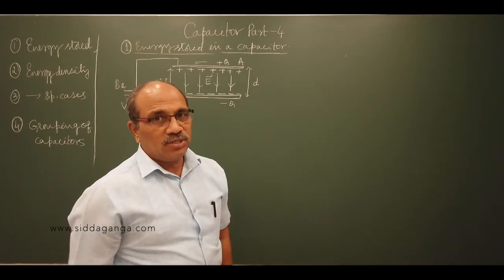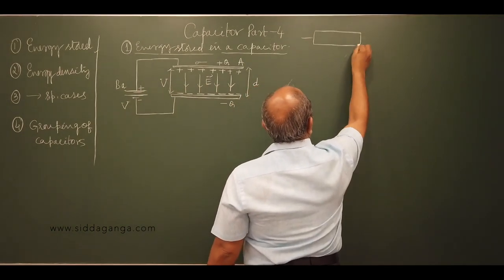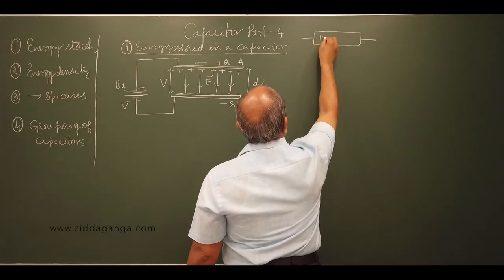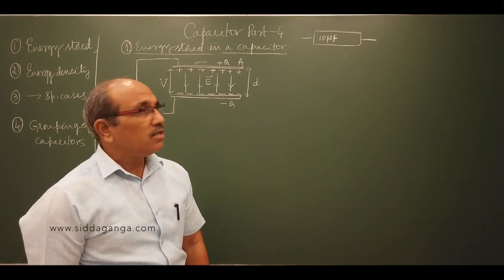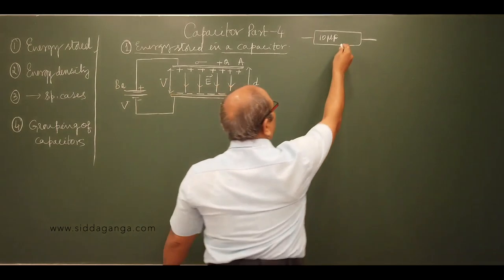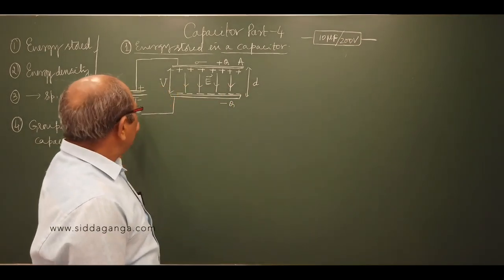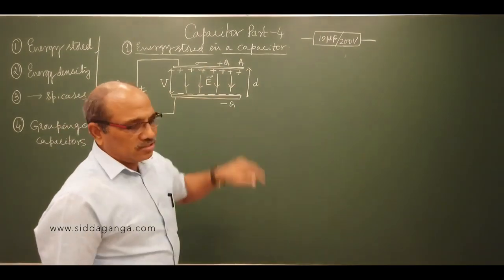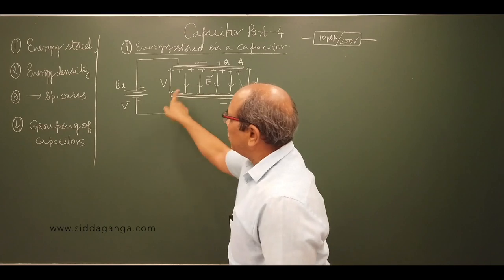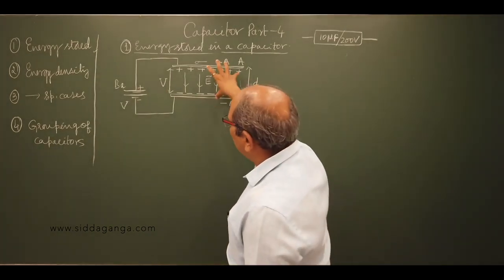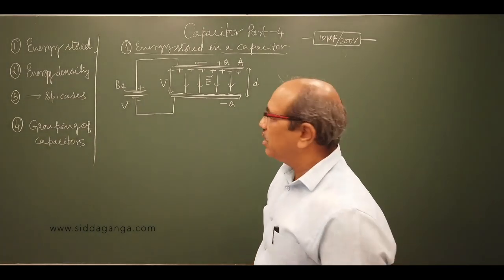Above the limit, the entire energy is converted into heat. When you look at a capacitor device, suppose it is rated 20 microfarad and 200 volts — that means you cannot give more than 200 volts to the capacitor. If you do, more charges store above the limit and the capacitor will go out of order — it will be punctured.